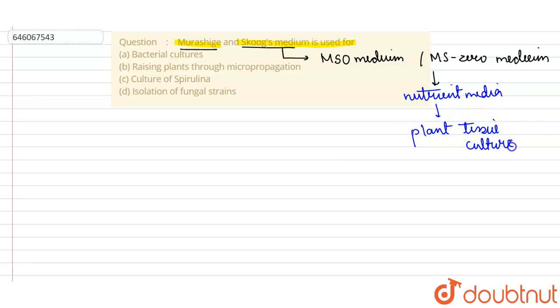So that different types of plants can be raised through the process of micropropagation. So it is most commonly used in micropropagation. It contains two major things.